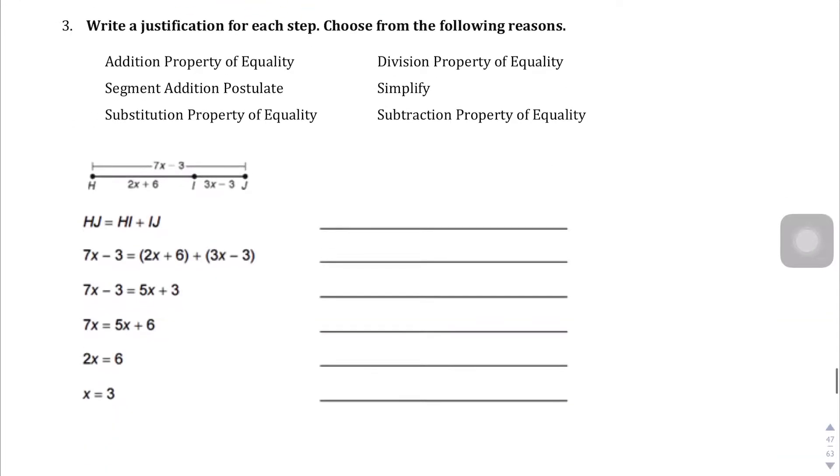Question number 3. We're going to be writing justifications for each of the following steps here. For this first part, it looks like hj equals hi plus ij. There we have two segments adding up to the bigger segment hj. So we're going to call this the segment addition postulate.